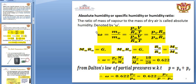Absolute humidity, specific humidity, and humidity ratio — these three terms refer to the same concept. Absolute humidity is the ratio of mass of vapor to the mass of dry air, represented by omega (ω).